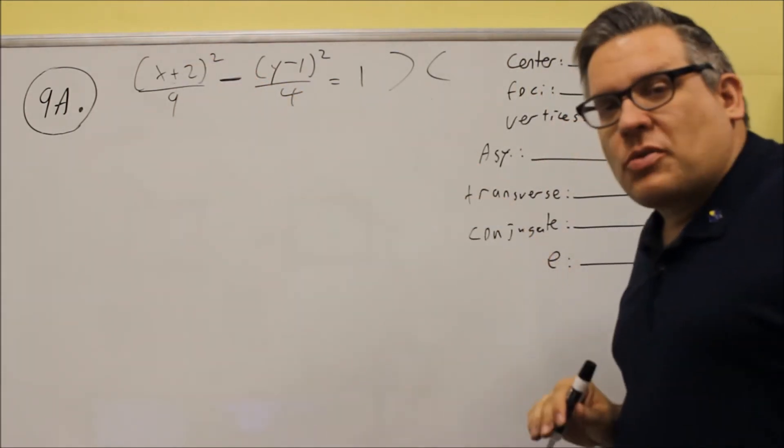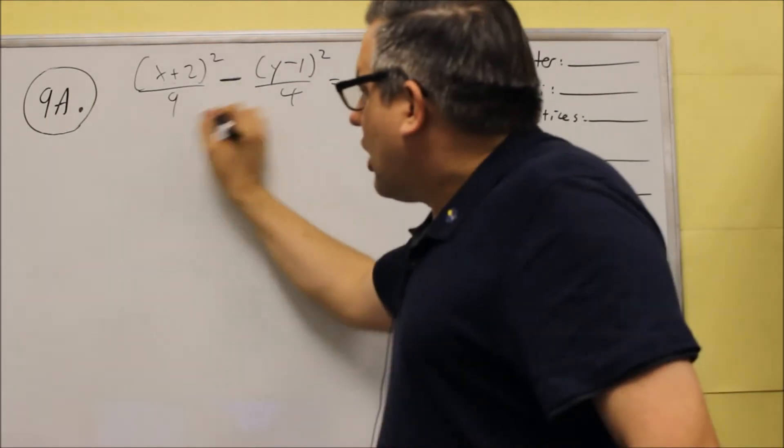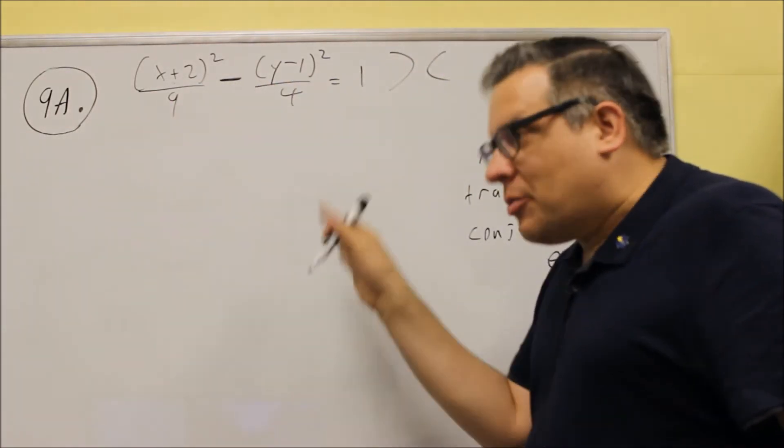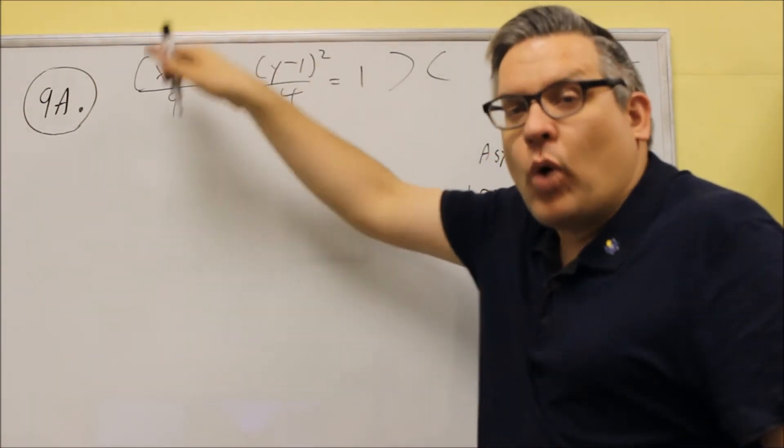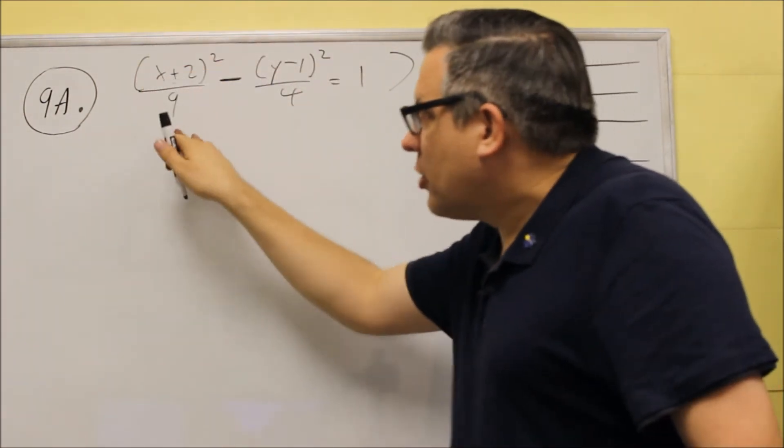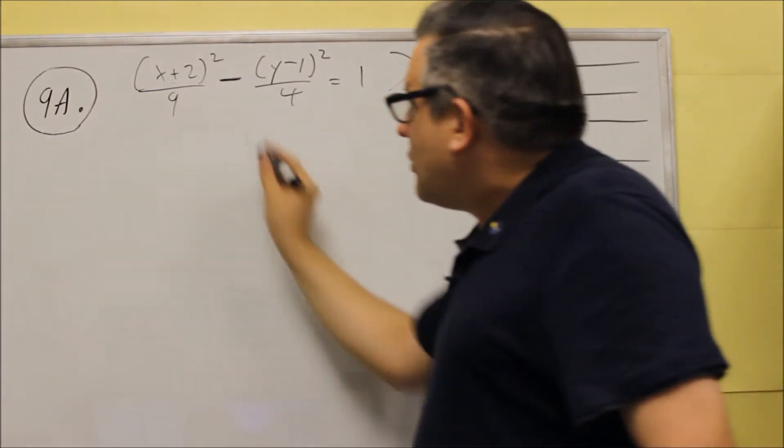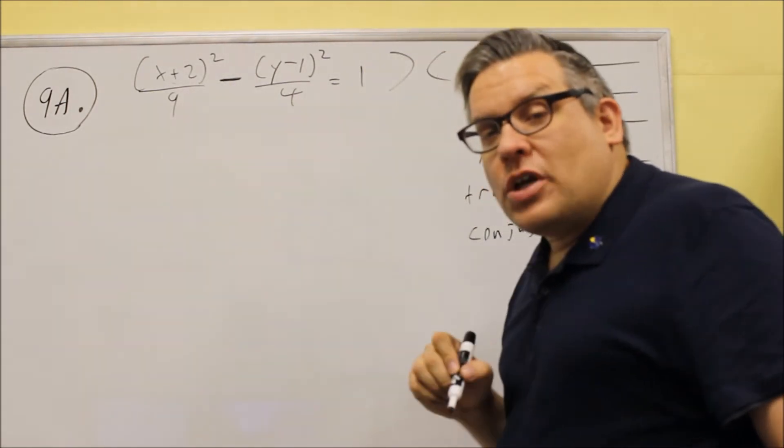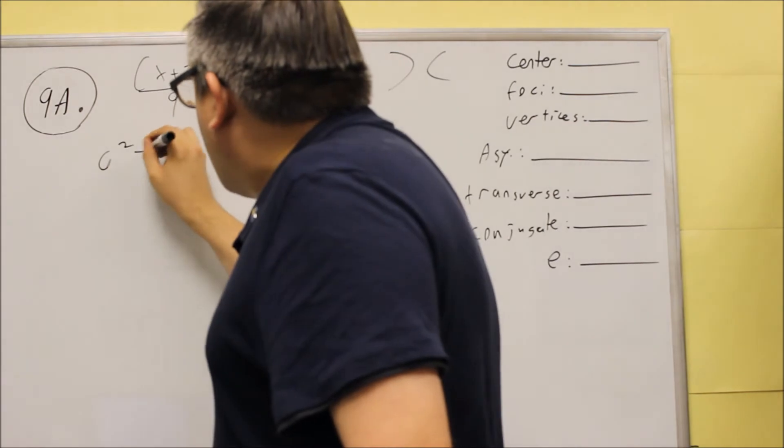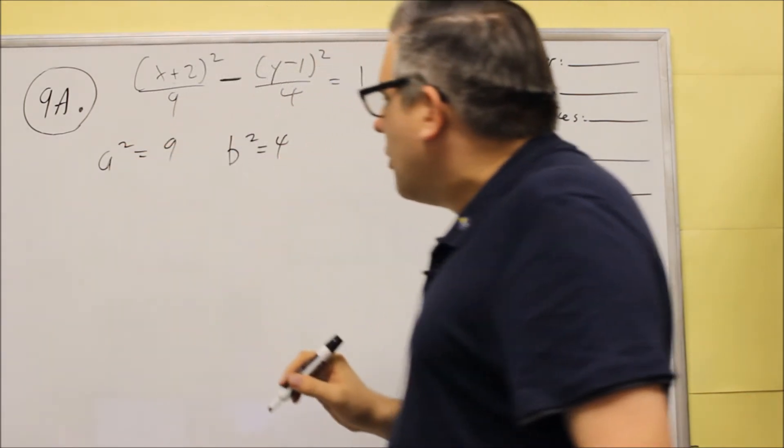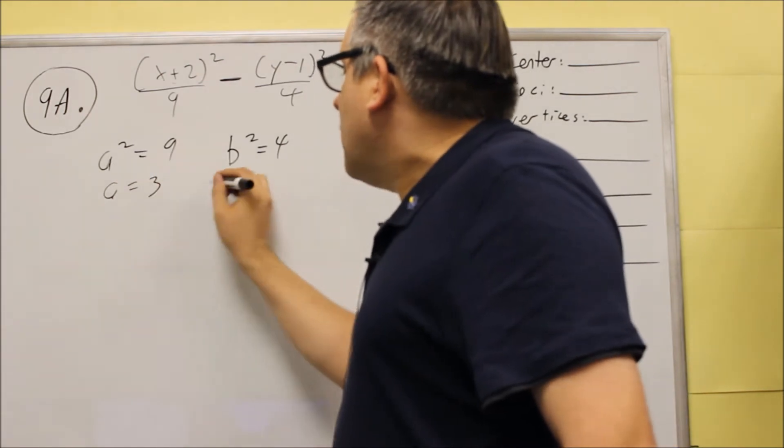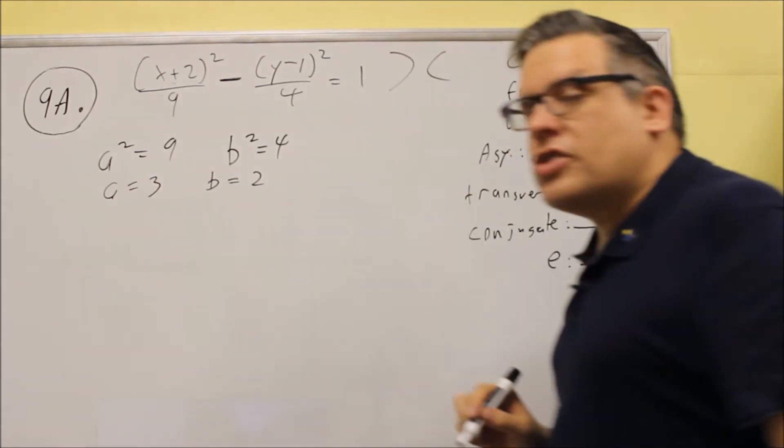Whatever comes first is automatically, no matter what the number is, automatically a² every time. Regardless of whether it is x on top or y on top. It doesn't matter. Whatever number comes first here, it's in front of the minus sign. That's going to be your a². So a² equals 9 and b² equals 4. a is going to be 3 and b is equal to 2 when we take the square root of those.